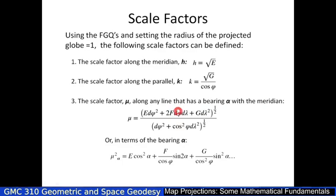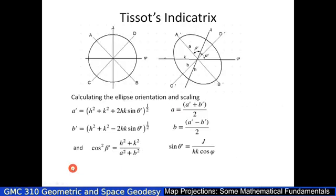Tissot's Indicatrix is simply a picture of what happens to a circle on the globe when you project it onto a map. You can also derive the scale factor M along any line that makes a bearing Alpha with a meridian, which we will look at further in the context of Tissot's Indicatrix.